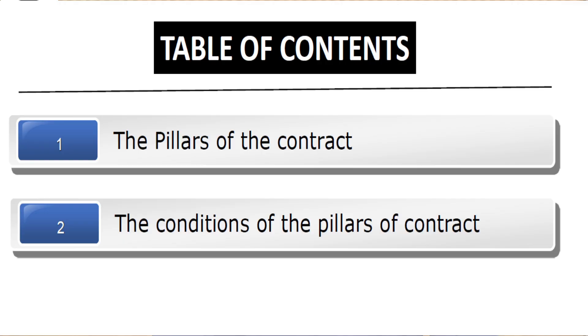Today's topic is the pillars of the contract — the elements of the contract. We have talked about and highlighted in the previous sessions the definition of the contract. Today we move on to a high-level description of the elements of the pillars, and in the following sessions we will pick up each pillar and zoom into it with more discussion and detail.